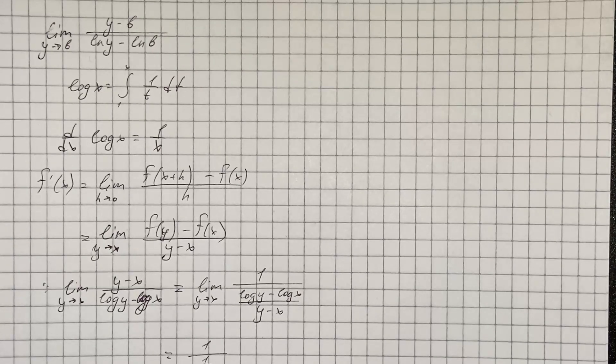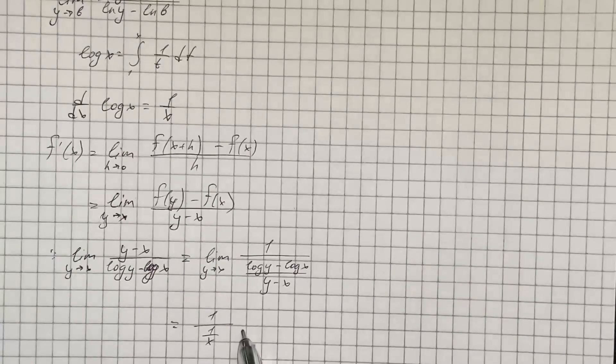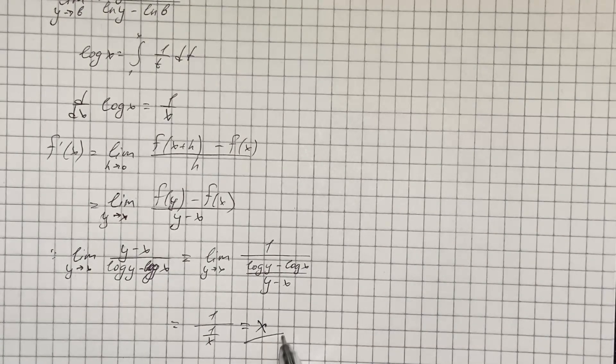So when we divide 1 by 1 over x, we get just x. So that's the value of this limit.